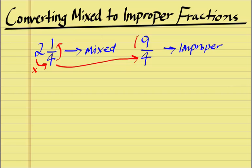Let's take a look at another example. Say if we had 4 and 1 over 3.